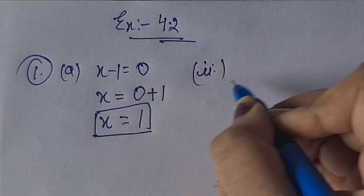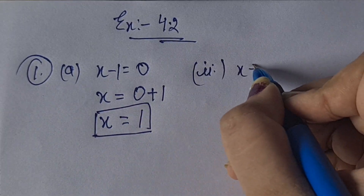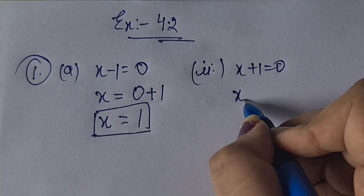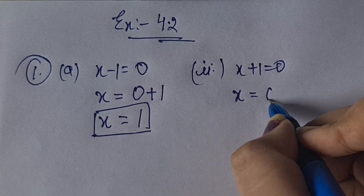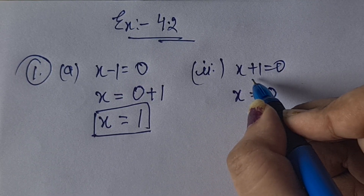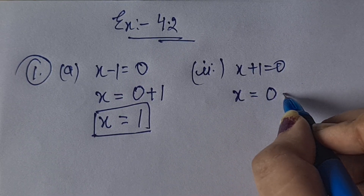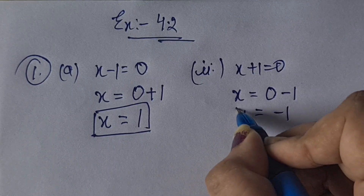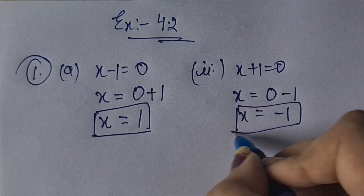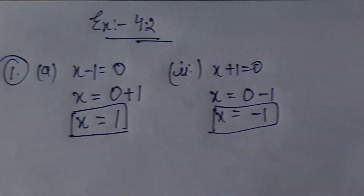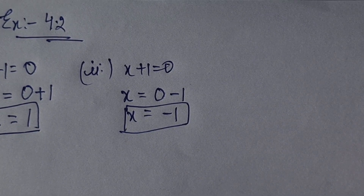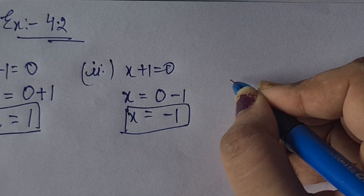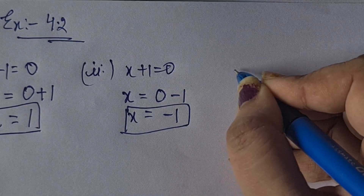Second part: x plus 1 = 0. So x = 0 minus 1, that is minus 1. When a term moves to the other side, plus becomes minus and minus becomes plus.